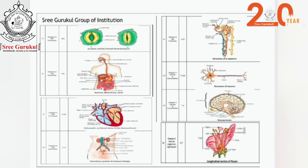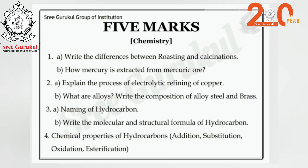For 5-mark questions, the important areas are from two key lessons: metals and non-metals, and carbon and its compounds. In metals and non-metals, expect questions on roasting and calcination, extraction of metals — especially mercury extraction which is frequently asked — electrolytic refining of copper, advantages of alloys, and composition of alloys like steel, brass, and bronze.